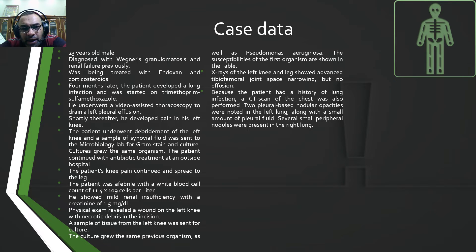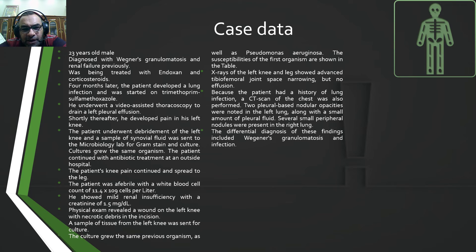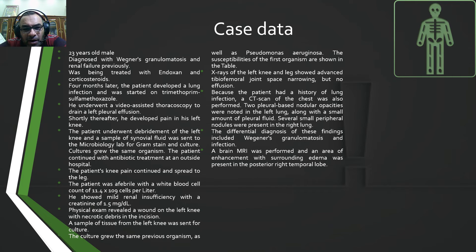Because the patient had a history of lung infection, a CT scan of the chest was also performed. Two pleural-based nodular opacities were noted in the left lung along with a small amount of pleural fluid. Several small peripheral nodules were present in the right lung. The differential diagnosis of these findings included Wegener's granulomatosis and infection. A brain MRI was performed and an area of enhancement with surrounding edema was present in the posterior right temporal lobe.